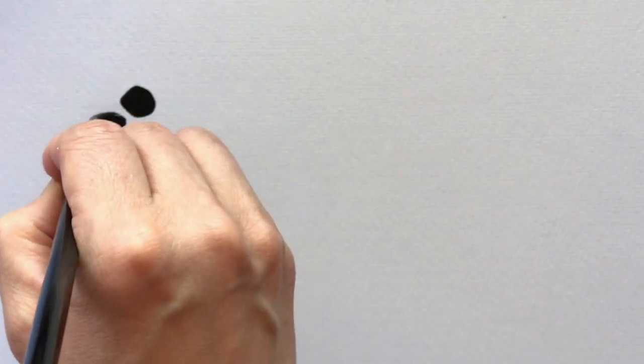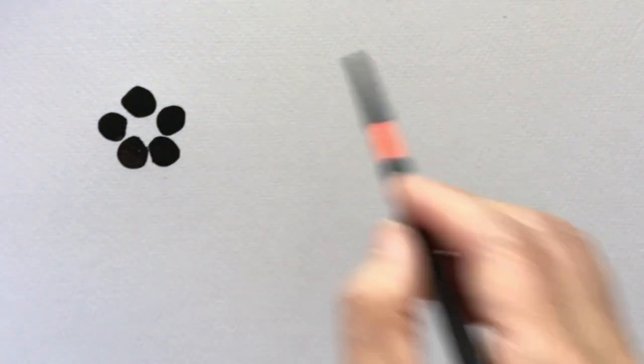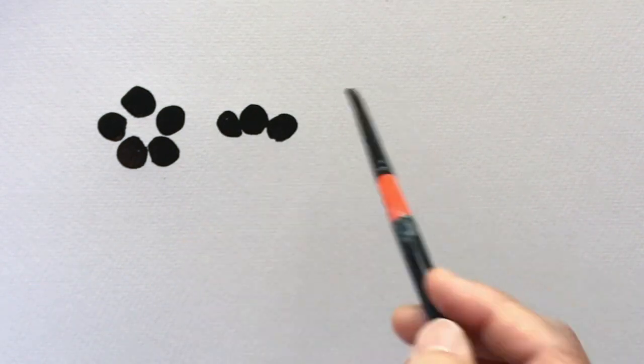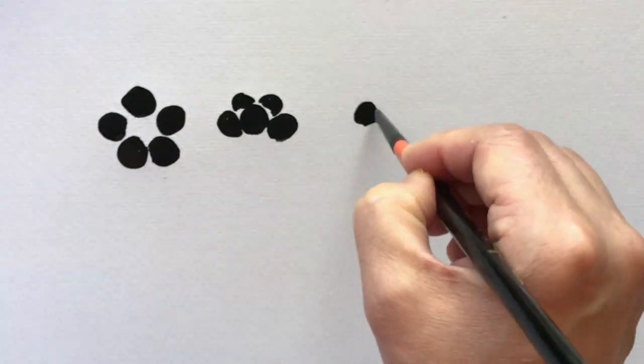Press down your brush like so, and fill it all in, to make a blotted out circle. And just practice drawing the petals. Because when you're drawing the middle, it's basically the same thing as the other one.